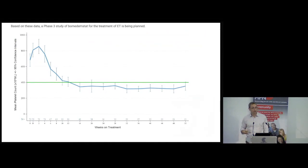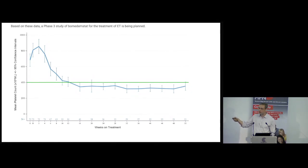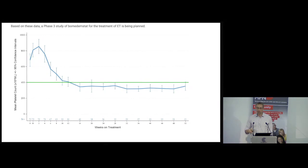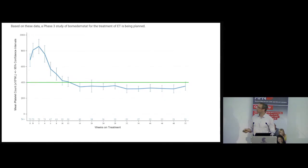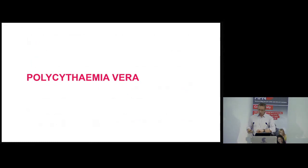There's a drug called an LSD1 inhibitor — bomedamstat — being trialed in patients with essential thrombocythemia who have not responded effectively to the standard treatment hydroxycarbamide. The data show it is a very powerful treatment for controlling the platelet count, bringing it down to normal levels in patients with ET. This drug is now being taken forward into a phase three randomized trial comparing it against best available current therapies, and that trial will be open in the UK.